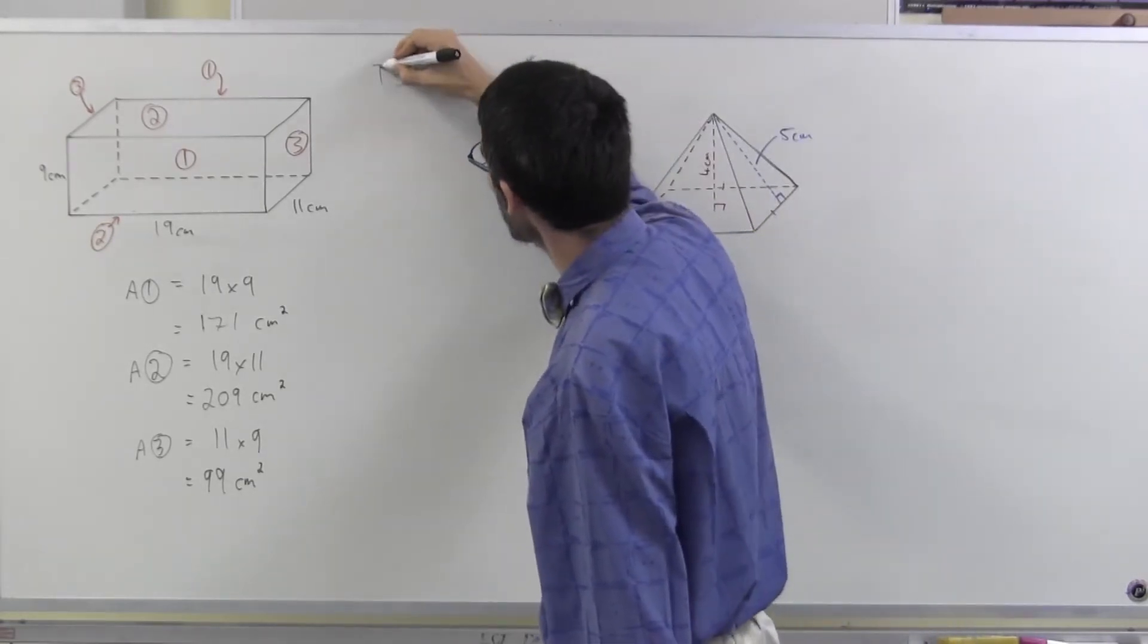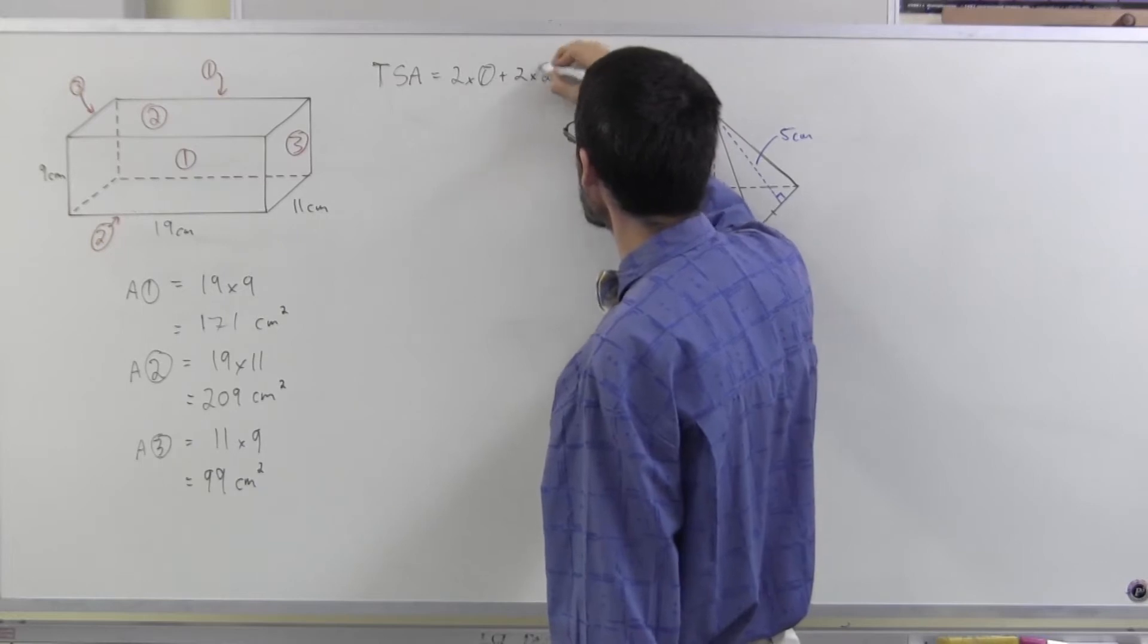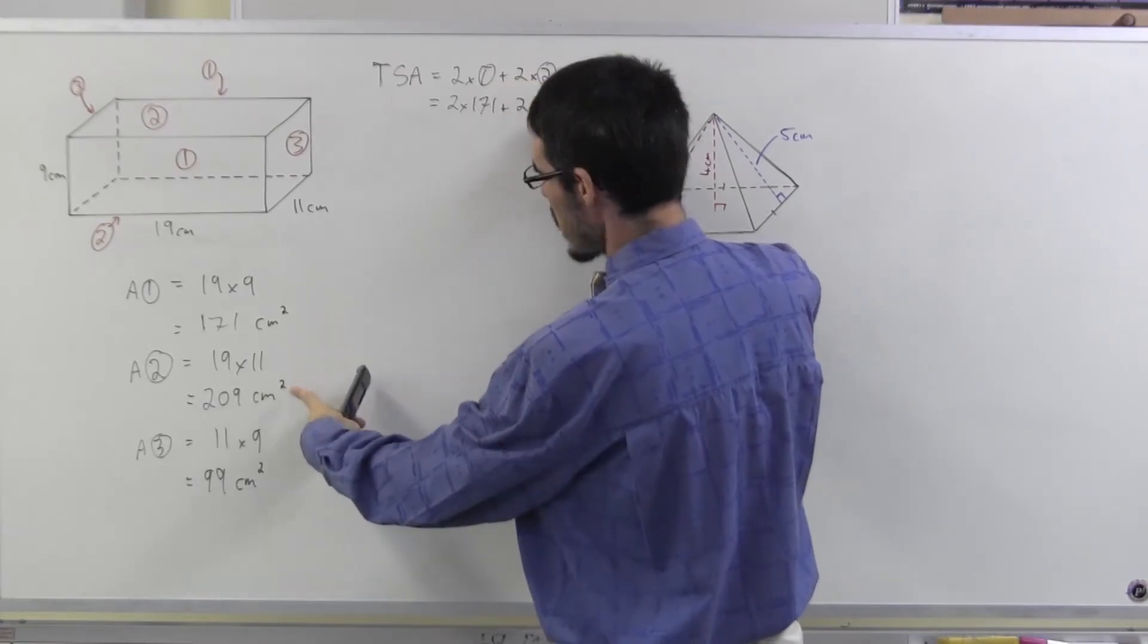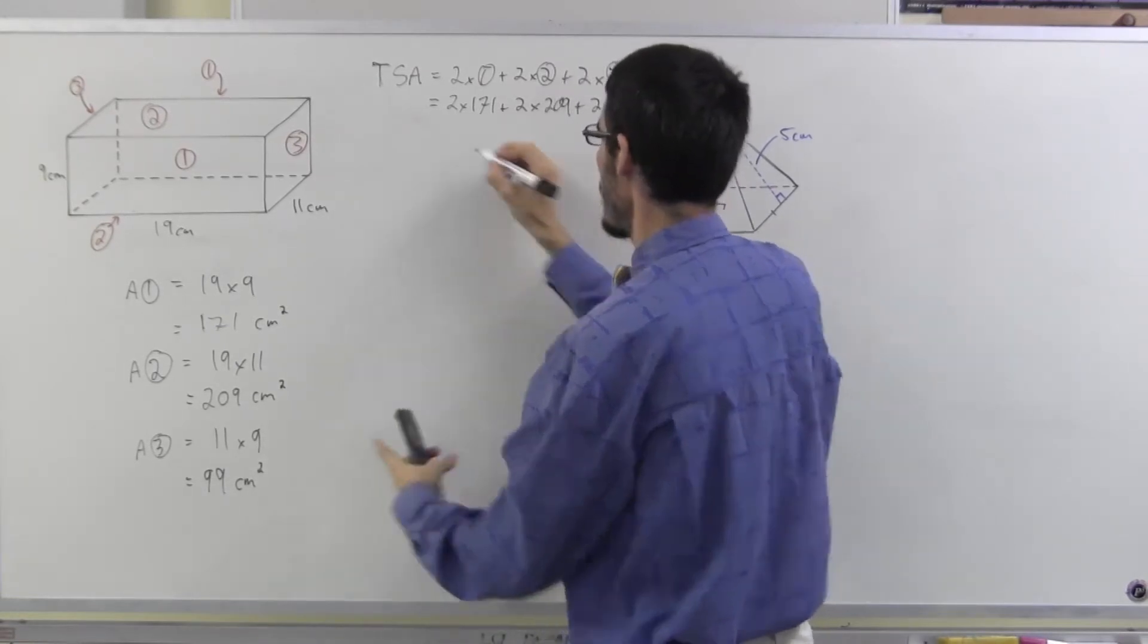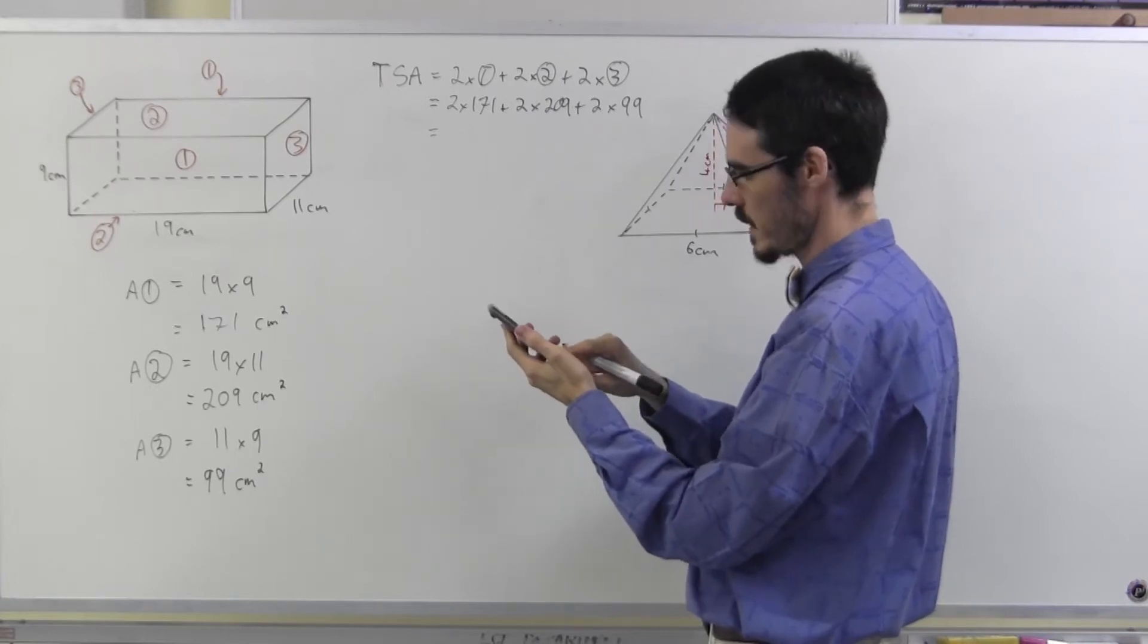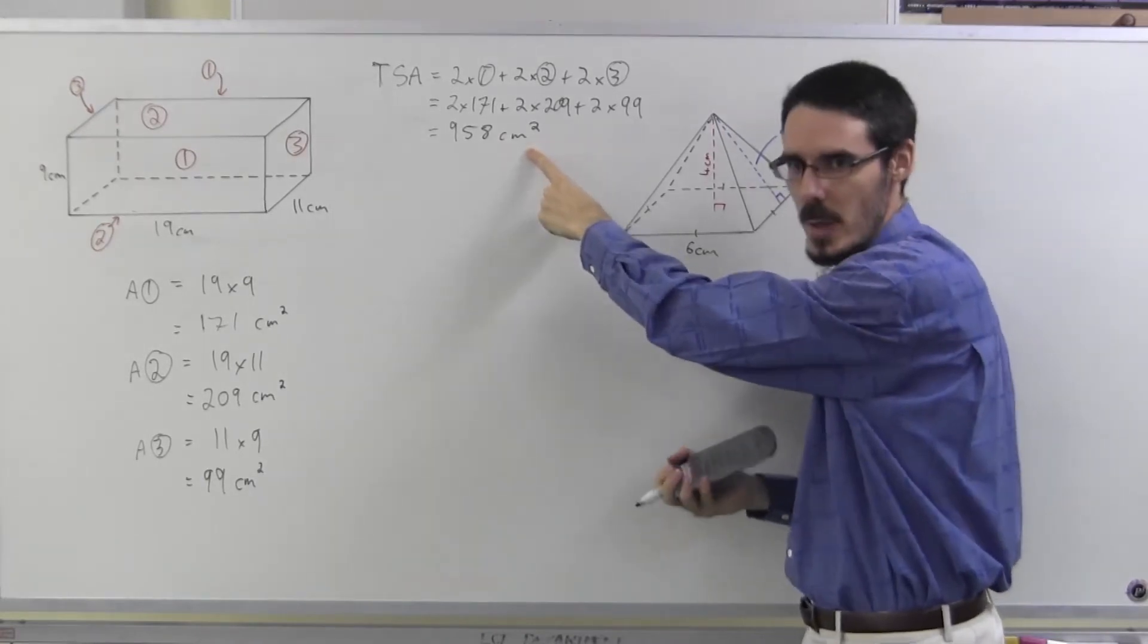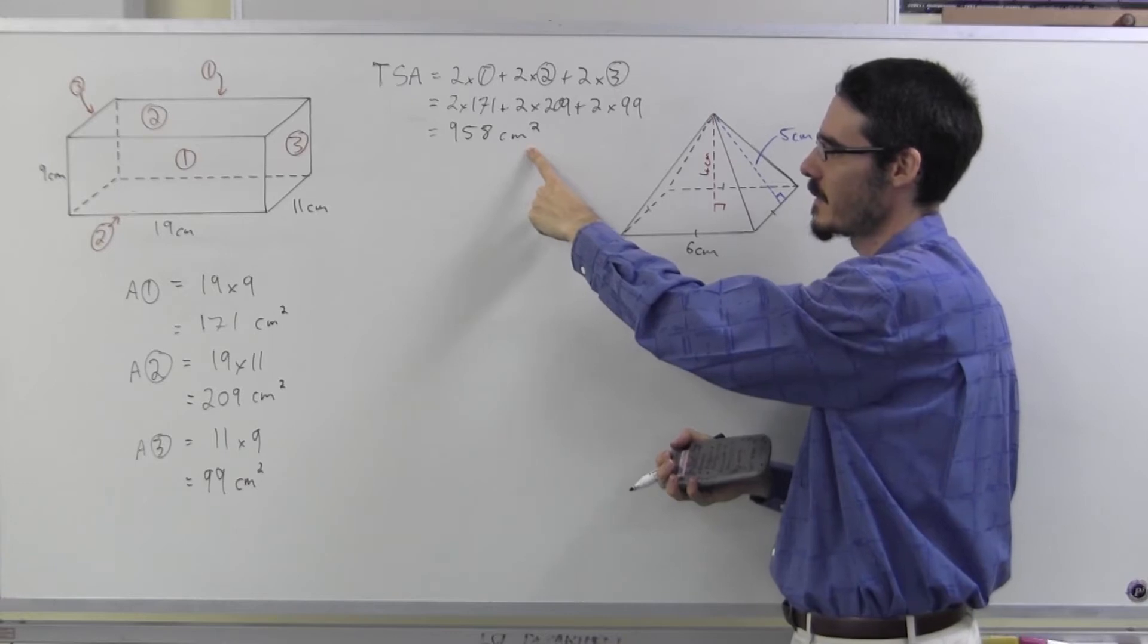So then the total surface area, pen's starting to run out, is going to be two lots of one, and two lots of two, and two lots of three. So two lots of 171, two lots of 209, and two lots of 99. Calculator. Two times 171 plus two times 209 plus two times 99, 958 square centimeters. Don't forget the units. And don't forget to call them square centimeters, not centimeters squared. I don't want you going and squaring this later by mistake. Square centimeters. Easy.